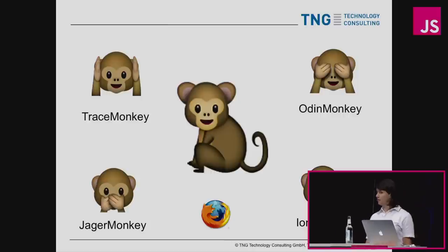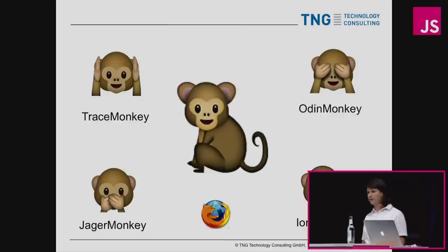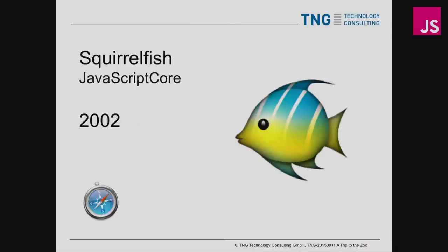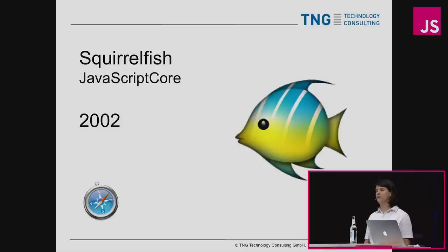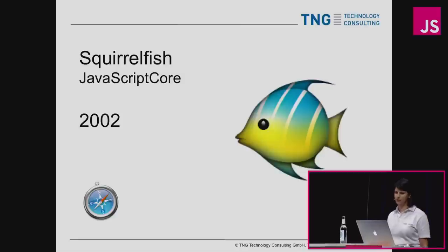SpiderMonkey comes with monkey friends: TraceMonkey, JägerMonkey, OdinMonkey, and IonMonkey — and they all help SpiderMonkey to be even faster. Then in 2002 the next animal, SquirrelFish — that's the code name for JavaScriptCore — was written. It's the JavaScript engine in Safari and WebKit.